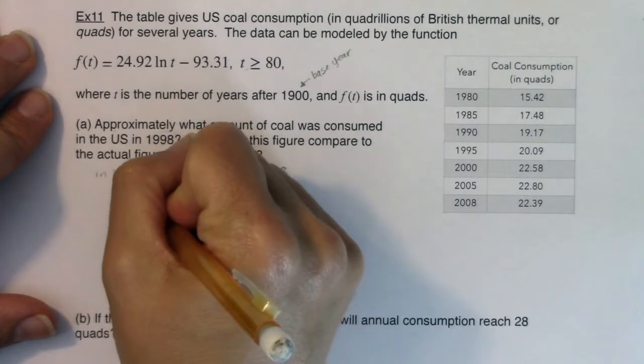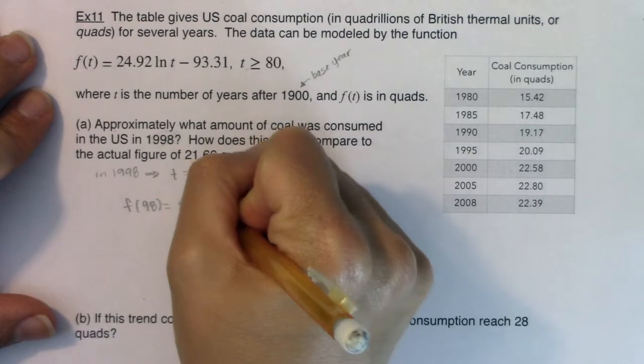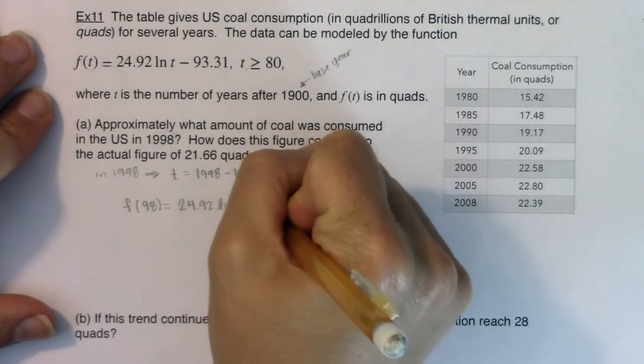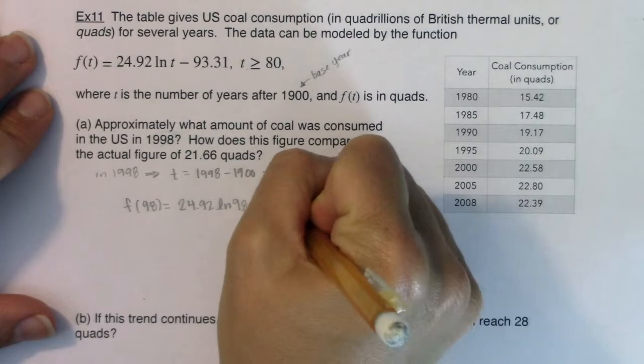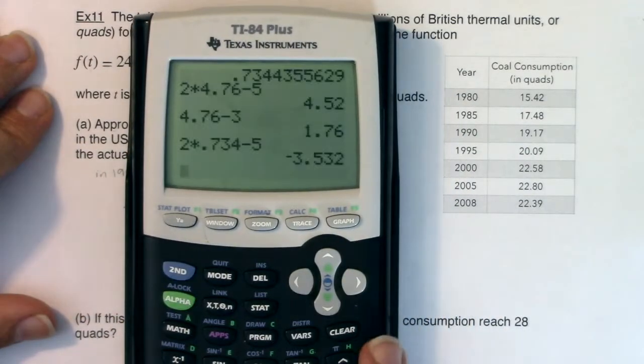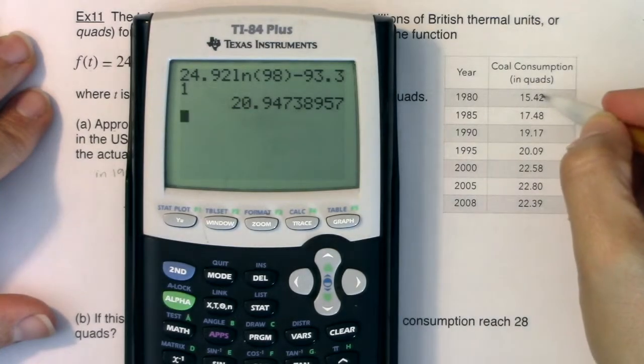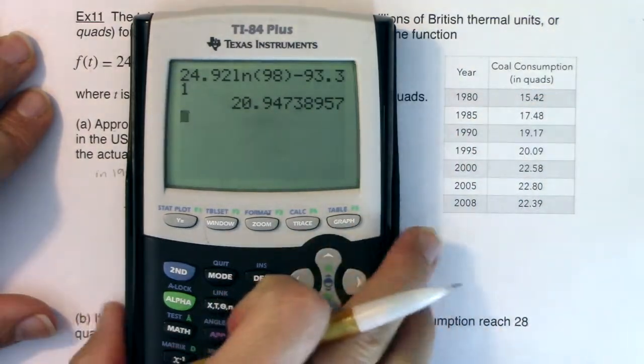So what I really want to do is I want to plug 98 in here. So let's see what f of 98 would be. It looks like I would have 24.92 ln of 98 minus 93.31. Let's see what we got. When I plug that on my calculator, I would have 24.92 ln of 98 minus 93.31. And it looks like I have about 20 point, I'll just go two decimal places because the data here was two decimal places. So it looks like 20.95.